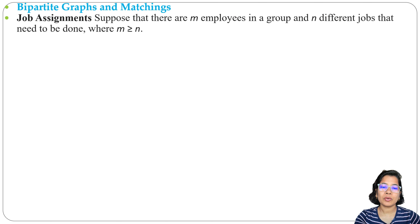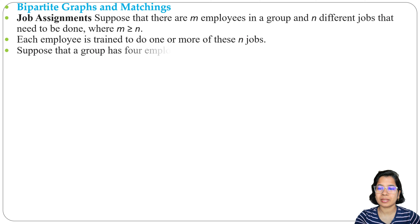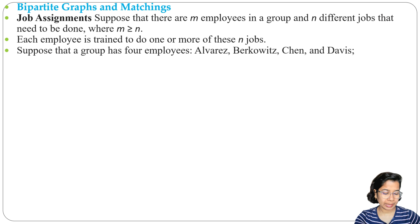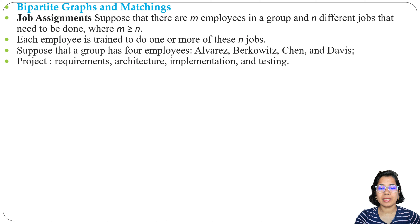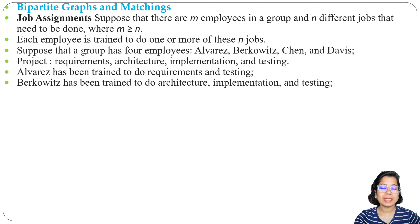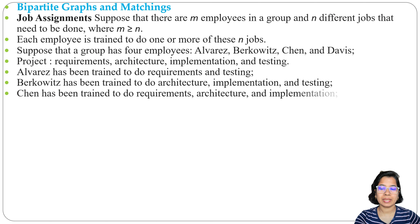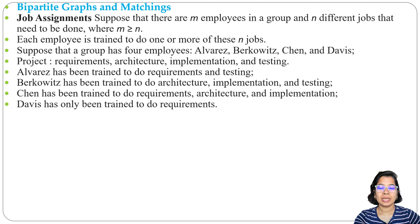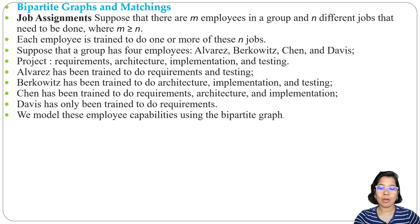For the job assignment, suppose we have M employees and N jobs. How can we assign N jobs to M employees? Every employee is skilled with more than one task. Suppose a group of 4 employees: A, B, C, D. And project tasks: content, requirement, architecture, implementation, and testing. Suppose A is trained to do requirement and testing, B is trained to do architecture, implementation and testing, C is trained to do requirement, architecture and implementation, and D is trained to do requirement only.